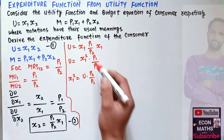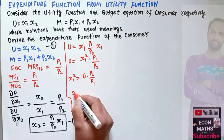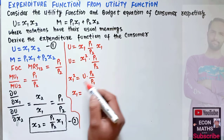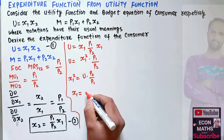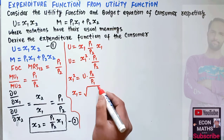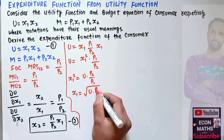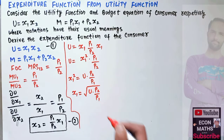Taking the positive square root, x1 = √(u · p2/p1). This is our demand function for good x1.